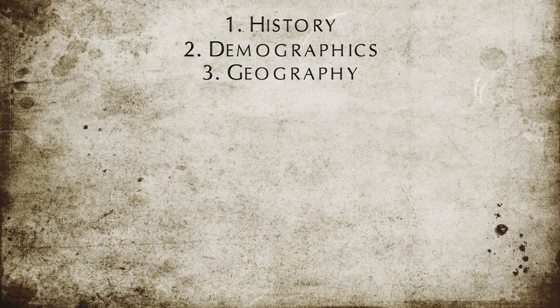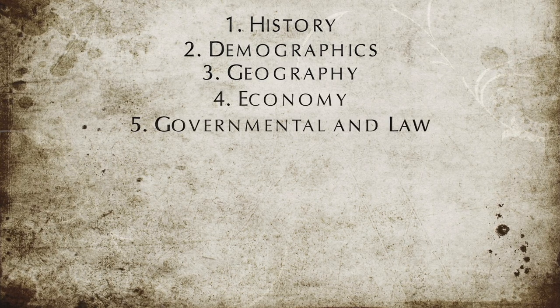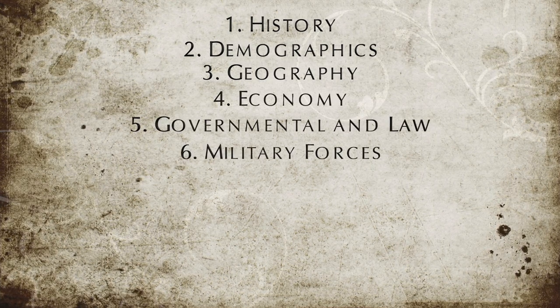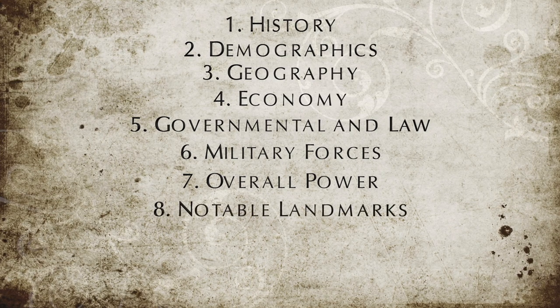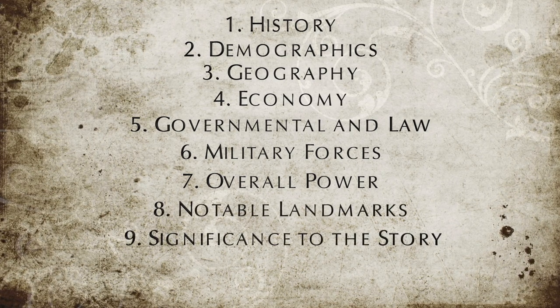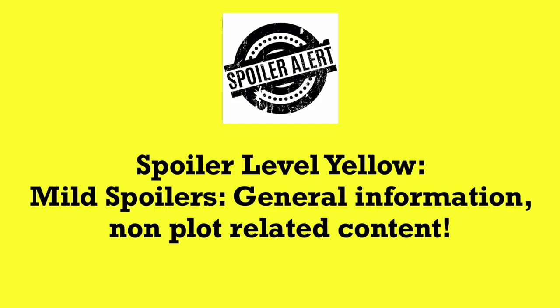The sections are as follows: History, demographics, geography, economy, governmental structure and law, military forces, overall power, notable landmarks, significance to the story, and then what happens after the end of the books. Sections one through eight will have a spoiler rating of yellow, meaning mild spoilers that don't touch on the plot but may give away details you don't get until later in the novels. Sections nine and ten will contain major spoilers and I will give a new spoiler warning before we reach those sections.